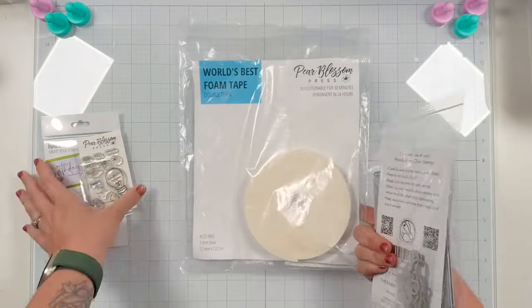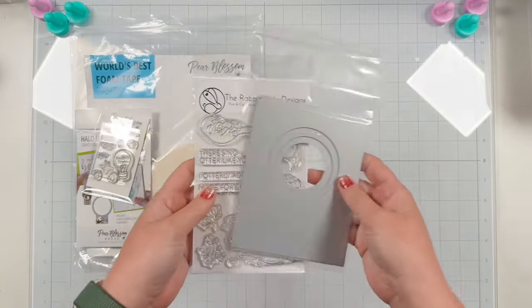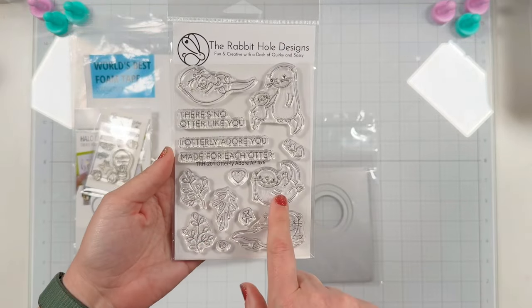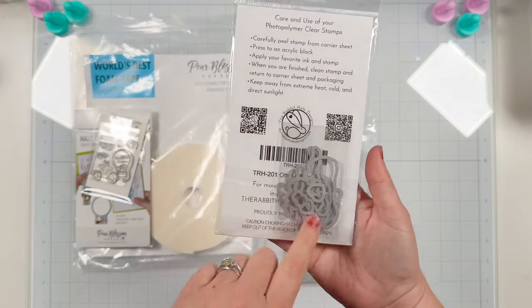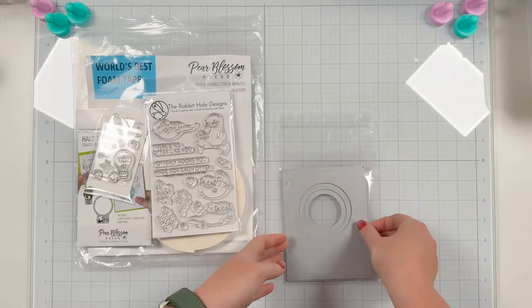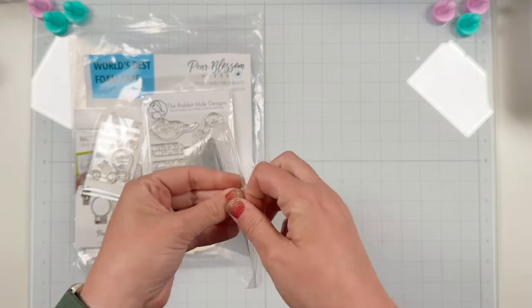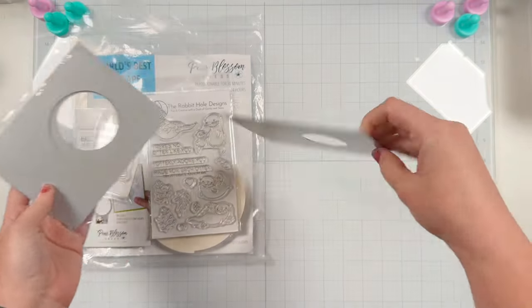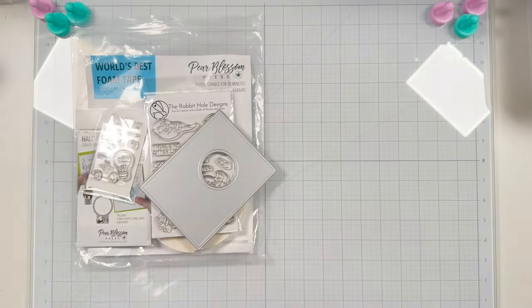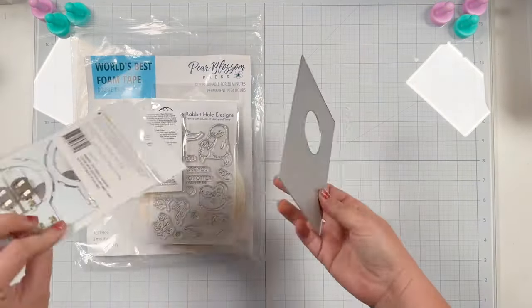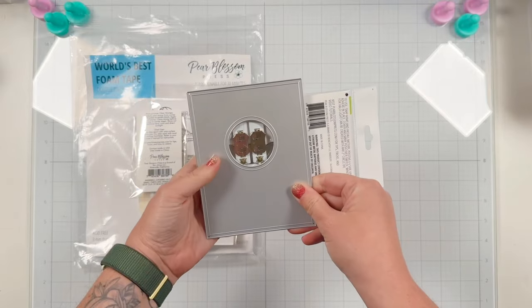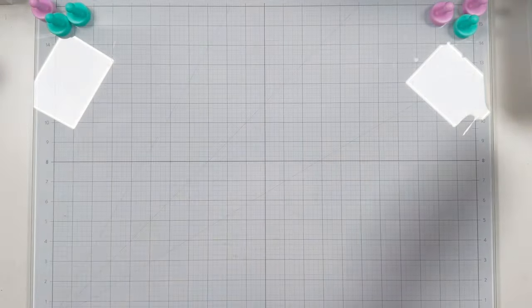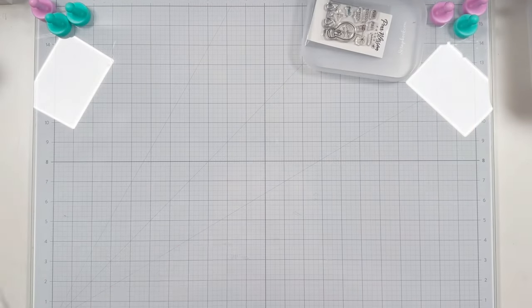It's a double thick foam tape. It's repositionable for about 30 minutes and it's a perfect thickness for the halo light which is why we'll be using it today. I also have Otterly Adore from Rabbit Hole Designs as well as the coordinating dies, and I'm also going to grab this modern embossed window panel number three die from Trinity Stamps because it is perfect for the halo lights. It's the perfect circle in the middle for those halo lights to remain hidden and just easy die cutting.